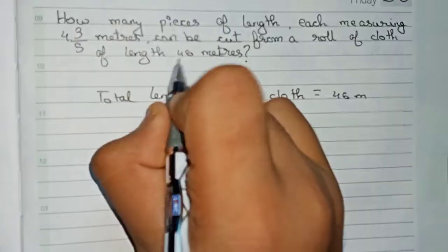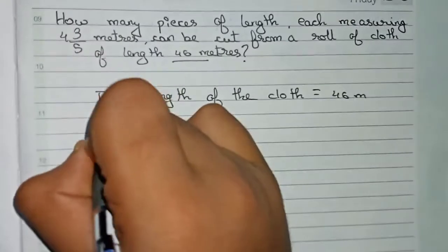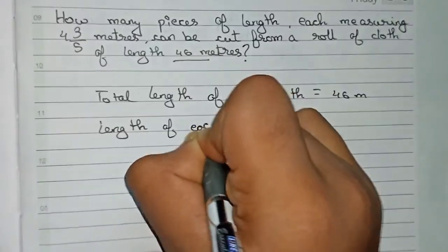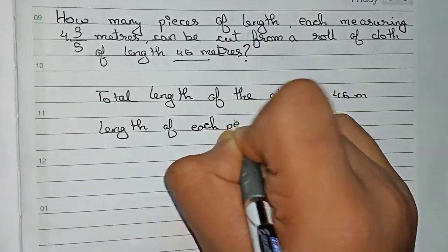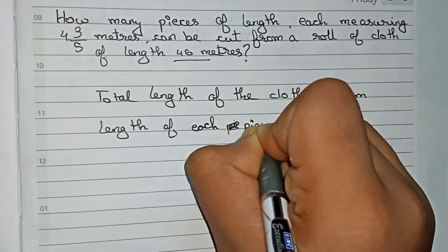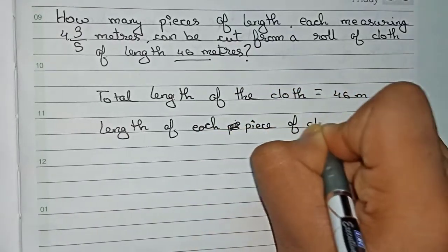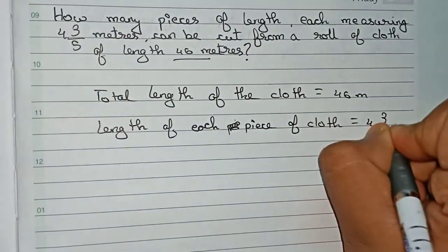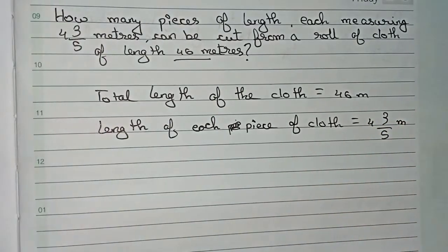Now write the length of each piece of cloth. Each piece of cloth is given as 4 and 3/5 meters. So that means, how many pieces of cloth are cut? That you have to find out.